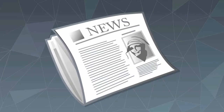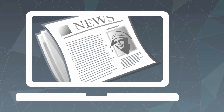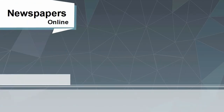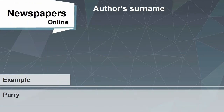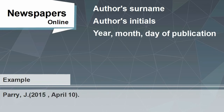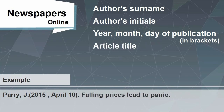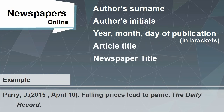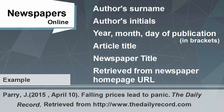How to reference a newspaper found online. As with the printed version just mentioned, you give the author's name and initials followed by the year, month and date of publication in brackets, the article title and the newspaper title. Then give the newspaper homepage URL from where you retrieved the information. When citing a newspaper in APA, you don't need to include the date of retrieval for electronic sources or when using an online database.